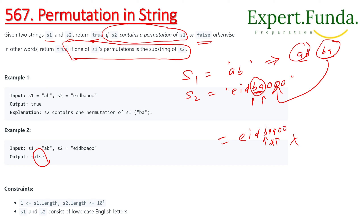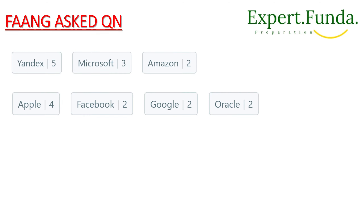This is the constraint we have given here. Now let's go to the problem solving — what approach we should take. This question has been asked in FAANG: Apple has asked this question, Facebook has asked, Google has asked, Amazon, Microsoft — almost every company has asked this question.